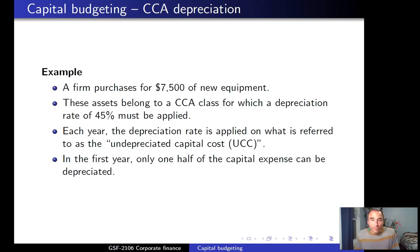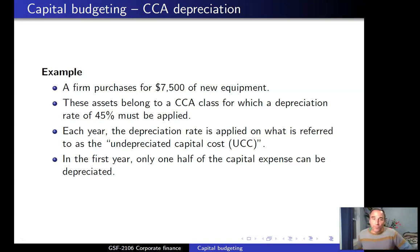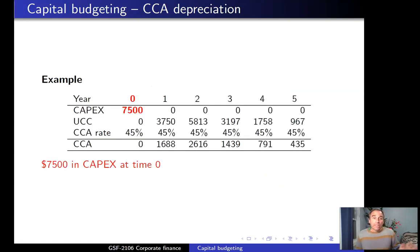As an example, a firm purchases assets worth $7,500 — it could be $7.5 million, it makes no difference. These assets belong to a CCA class for which the depreciation rate is 45% per year. The depreciation rate is applied to what is referred to as the undepreciated capital cost (UCC). In the first year only, one half of the capital expense can be depreciated. So at year 0, capex is $7,500, with a CCA rate of 45% applied across years 1 through 4 and beyond.